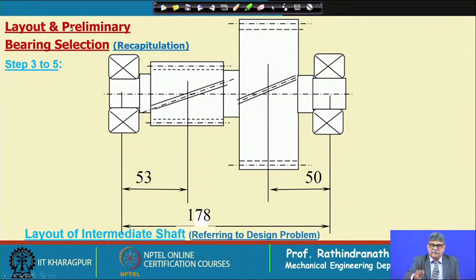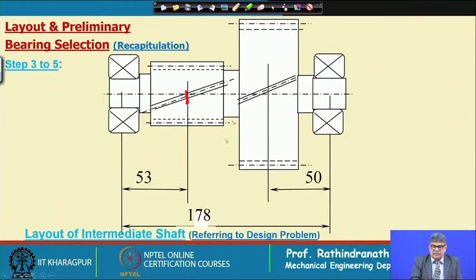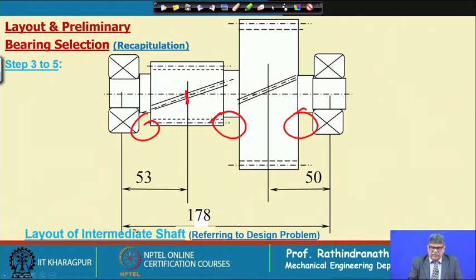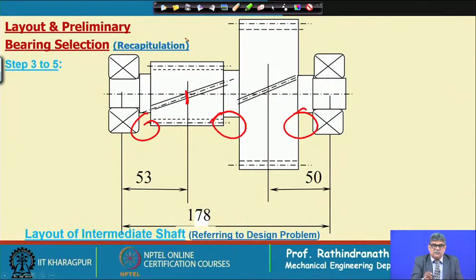We have the pinion here, we have taken the midpoint of the pinion — this is 5 millimeters more than the active width calculated. We have considered the proper gaps and taken a bearing of width between 20 to 25 millimeters, with midpoint as the reaction point for bearing supports. From the drawing, this is 178 millimeters, this side is 53 millimeters, this side is 50 millimeters. This is the input side gear and this is the output side pinion.